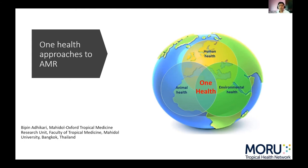Stepping into AMR, we cannot extricate human health from animal and environmental health. One Health has been defined heterogeneously in different literature and resources, but to me One Health is an intersection between animal, human, and environmental health. It reminds us that we cannot look at human health in isolation or with isolated lens.